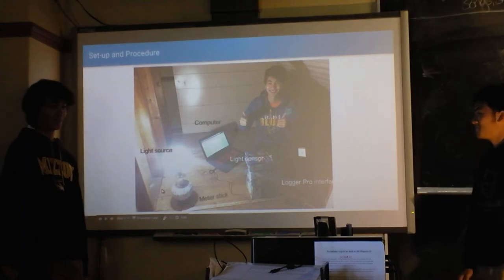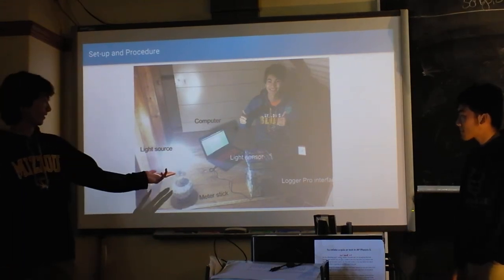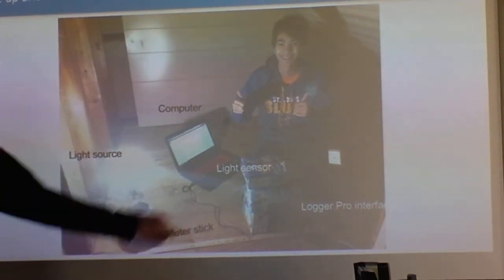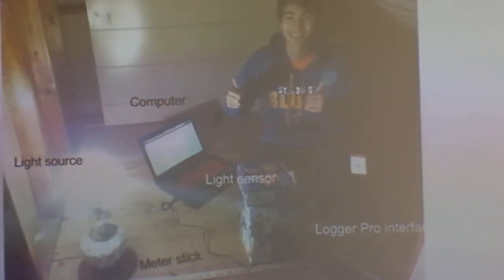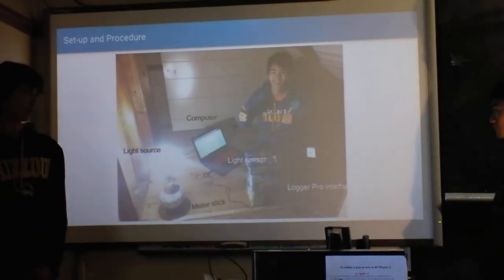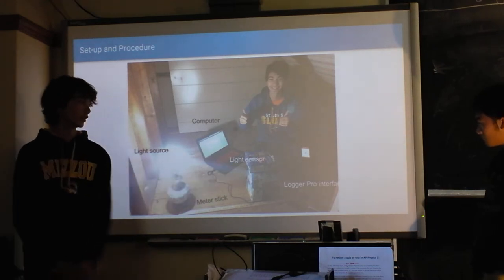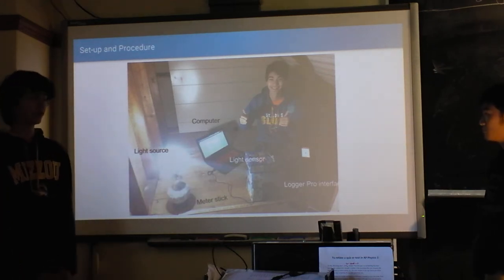This is our setup. We had our light source — our white light — here. Then, half a meter away, we had our light sensor. Right in between the two, at about 0.25 meters, we would place our different glass filters. We had about 10 of them.